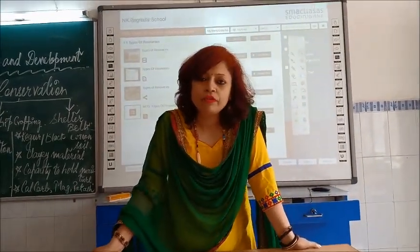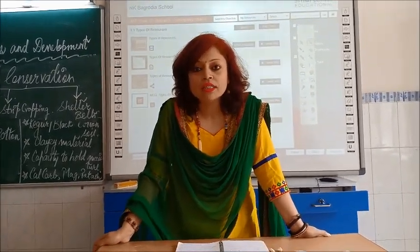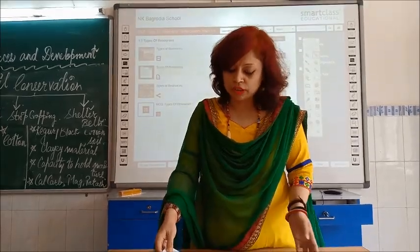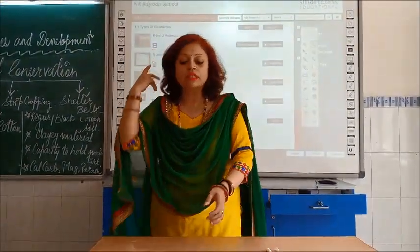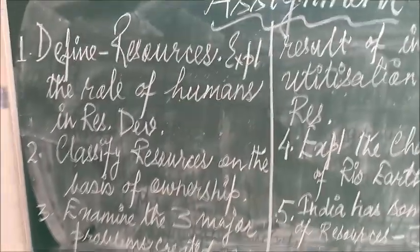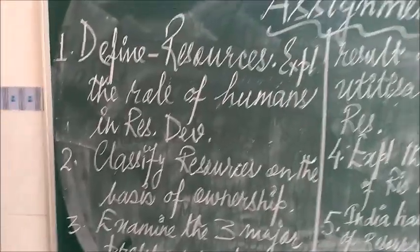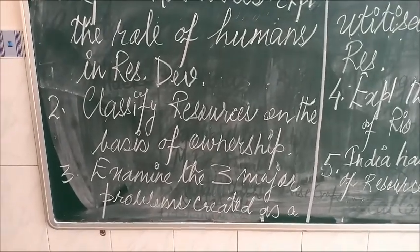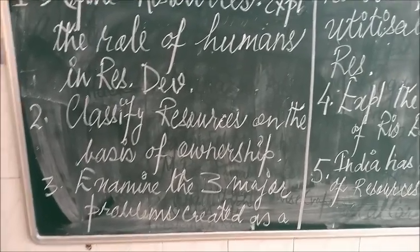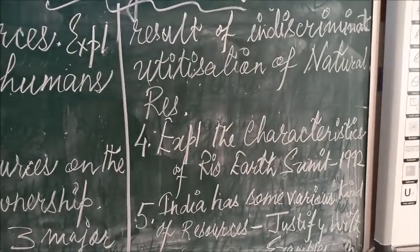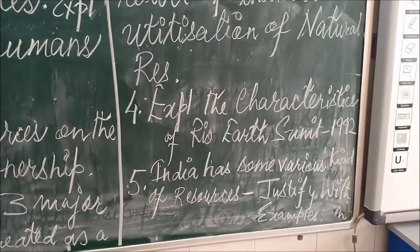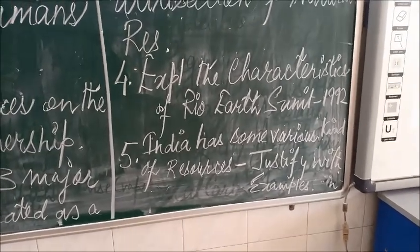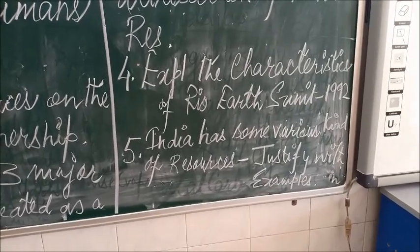Now we have come to an end and I am going to give you 11 questions. You will note them down, write the answers, and paste them in your copy because that will be graded. Question 1: Define resources. Question 2: Explain the role of humans in resource development. Question 3: Classify resources on the basis of ownership. Question 4: Examine the three major problems created as a result of indiscriminate utilization of natural resources. Question 5: Explain the characteristics of the Rio Earth Summit 1992. And India has various kinds of resources — justify with examples.